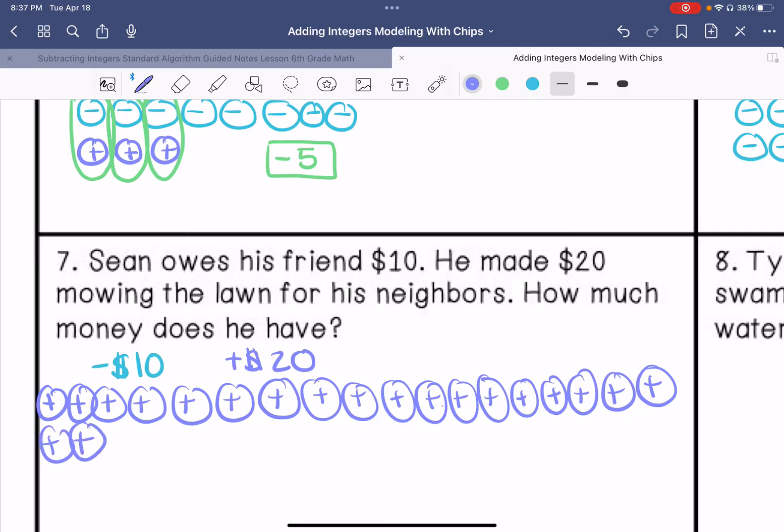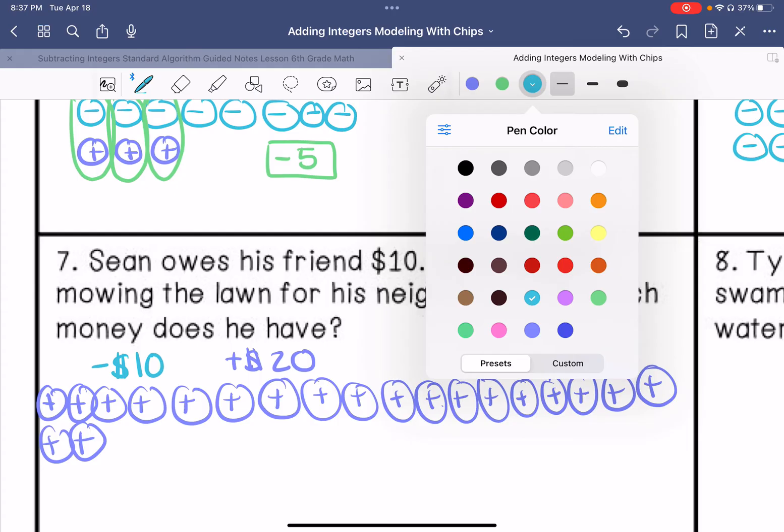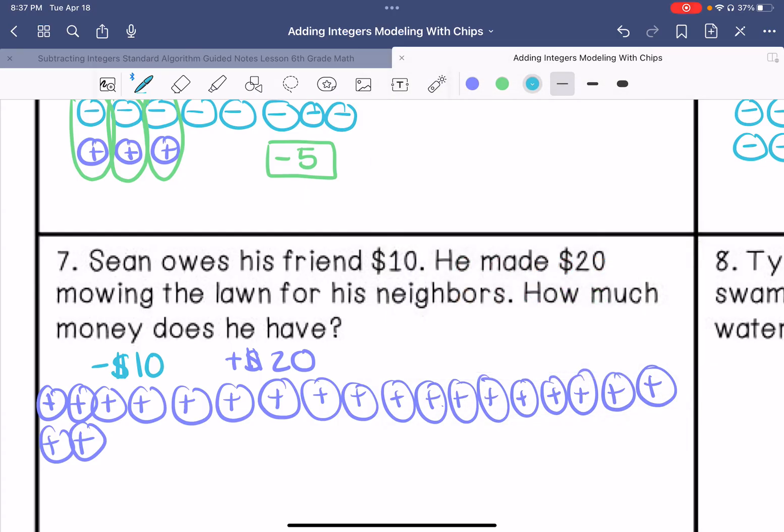Drawing 20 positive chips: 1, 2, 3, 4, 5, 6, 7, 8, 9, 10, 11, 12, 13, 14, 15, 16, 17, 18, 19, 20. And then 10 negatives: 1, 2, 3, 4, 5, 6, 7, 8, 9, 10.